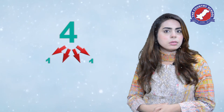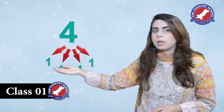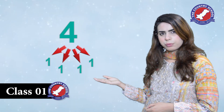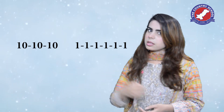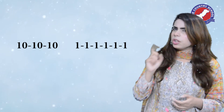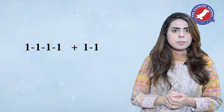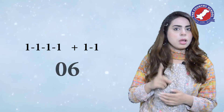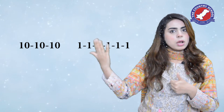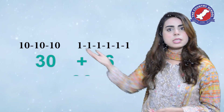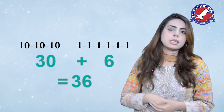And then, hamare paas 4 mein kitne 1s hain? Can you guys count? 1, 2, 3, and 4. So now we have 6 ones and 3 tens, isn't it? Now, can you guys tell me what 4 plus 2 is? Agar hum 4 ones aur 2 ones ko mila dein, toh woh kitne ones banenge? We have 6 ones, right? So now we have 3 tens and 6 ones — 30 plus 6 is equal to 36. Very good!